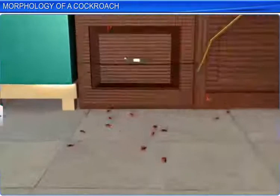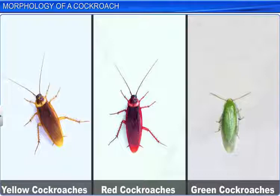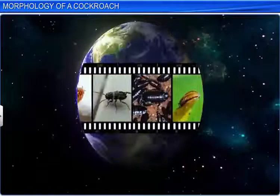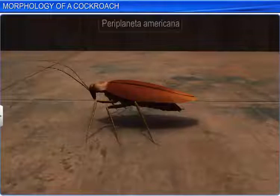Cockroaches are usually brown or black. However, in the tropics, you may also find bright yellow, red, and green cockroaches. There are about 4,000 species of cockroaches, and their lengths range between 0.6 and 7.6 centimeters. A common species, Periplaneta Americana, measures 3.4 to 5.3 centimeters in length.